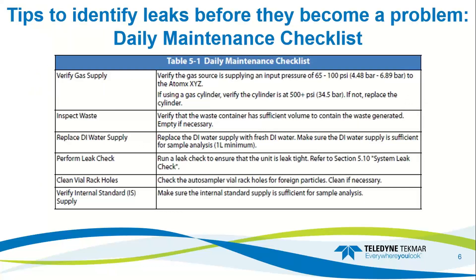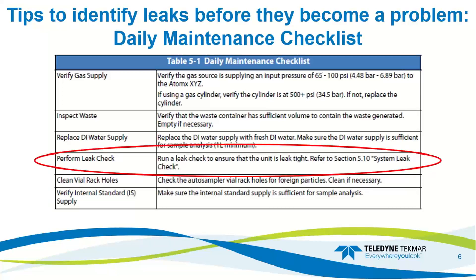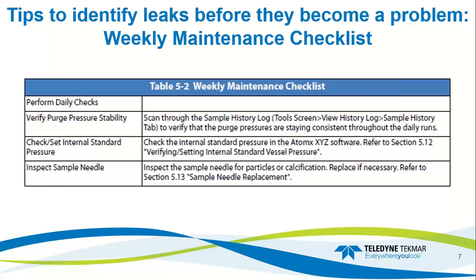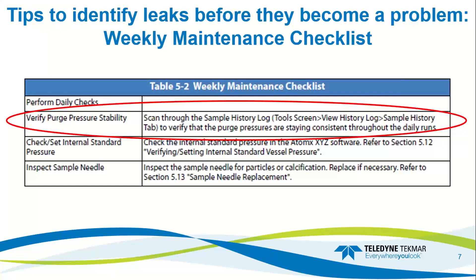Here are some tips to identify leaks before they become a problem. There is a daily maintenance checklist, and on this checklist one of the items is to perform a leak check. A carefully designed and faithfully executed preventative maintenance program is the best method for maintaining your instrument. It will help continue the performance standards of the unit and decrease the possibility of downtime. There is also a weekly maintenance checklist, which includes all of the items from the daily maintenance checklist, and it also suggests that you go through your sample history log to verify the purge pressures stay consistent throughout daily runs.